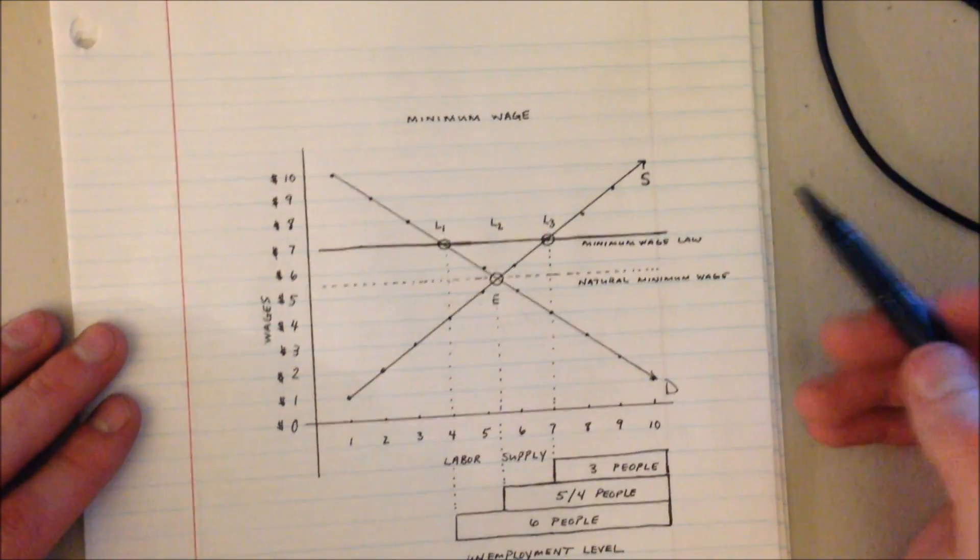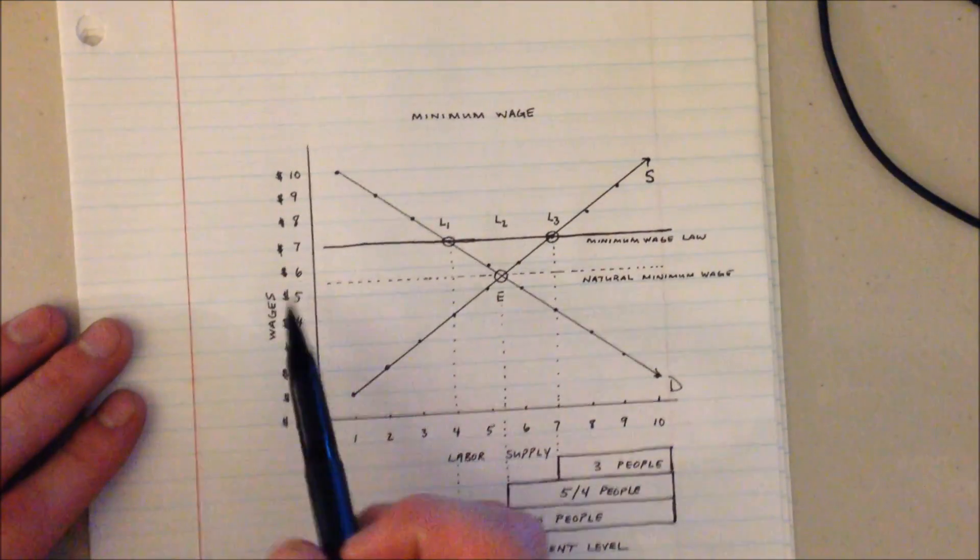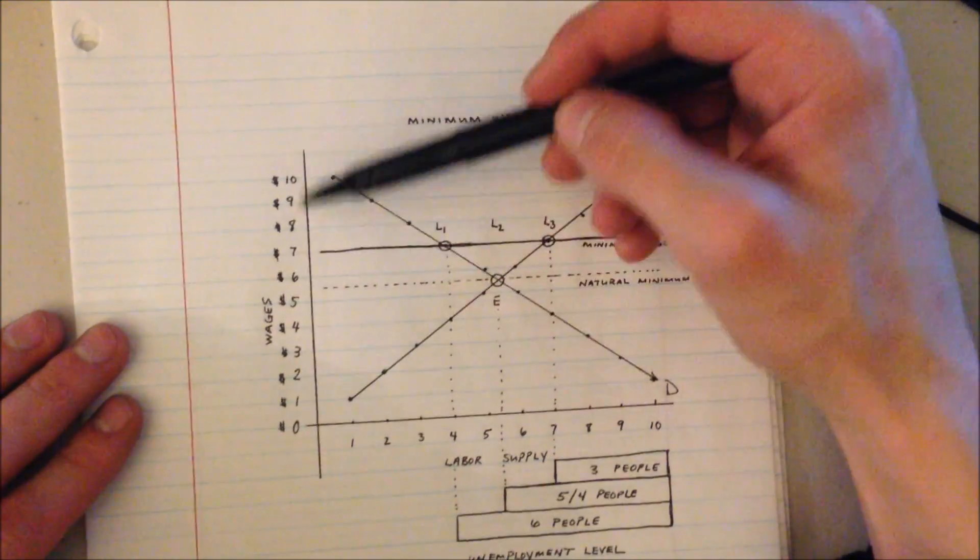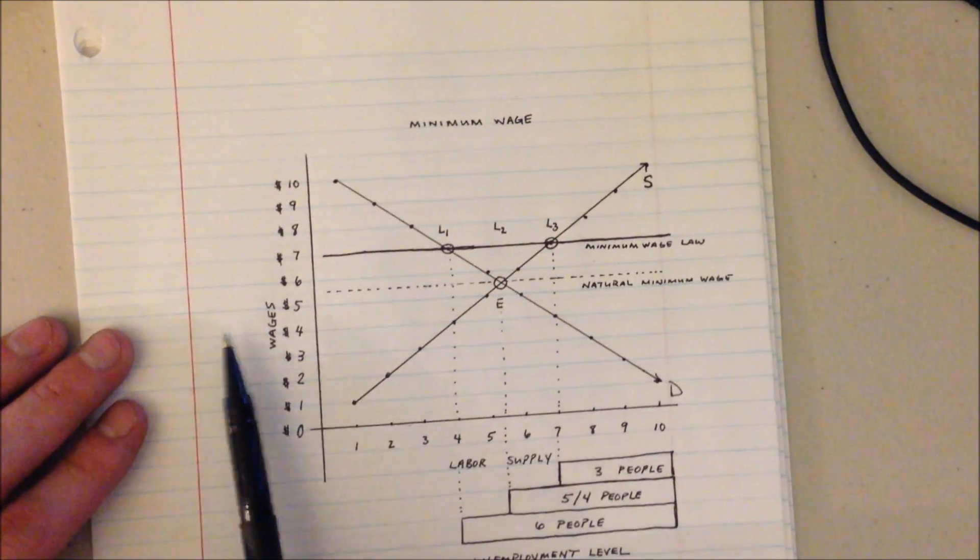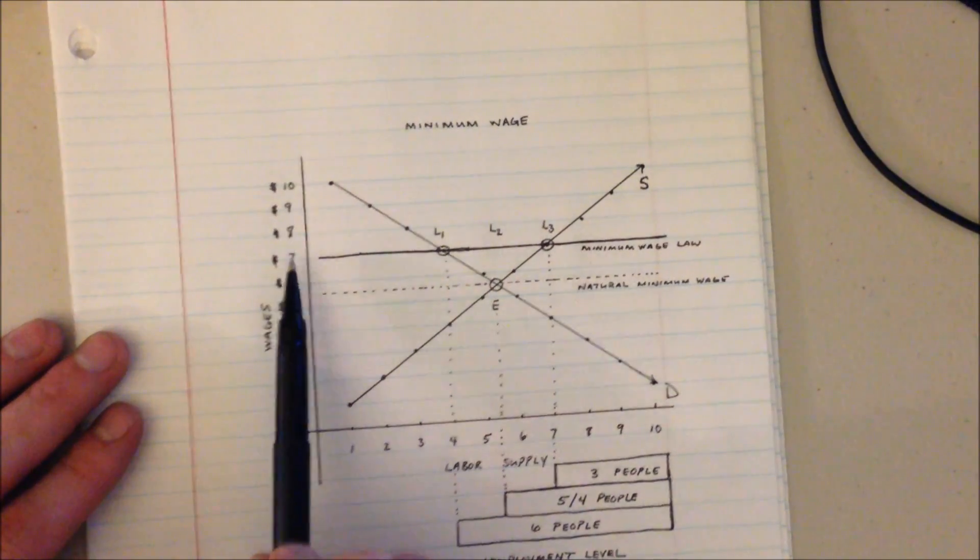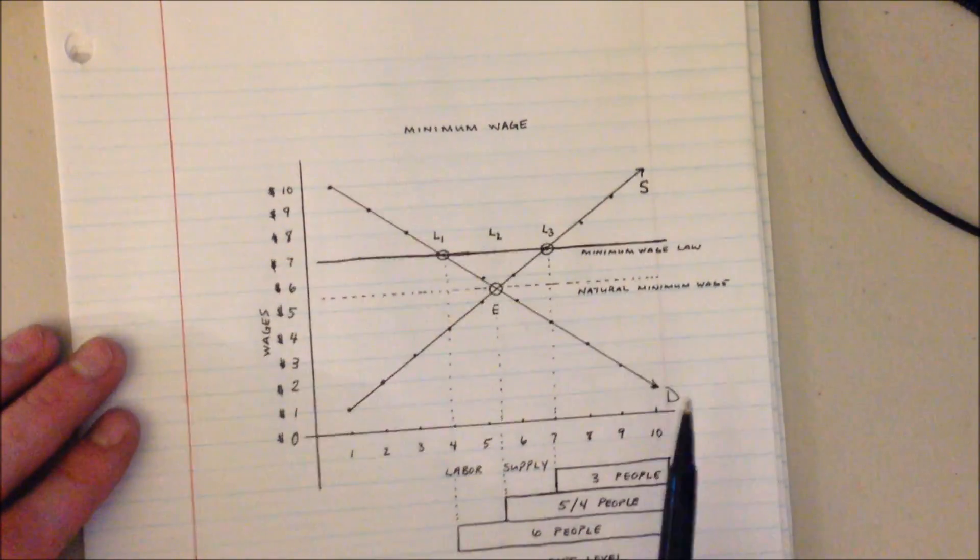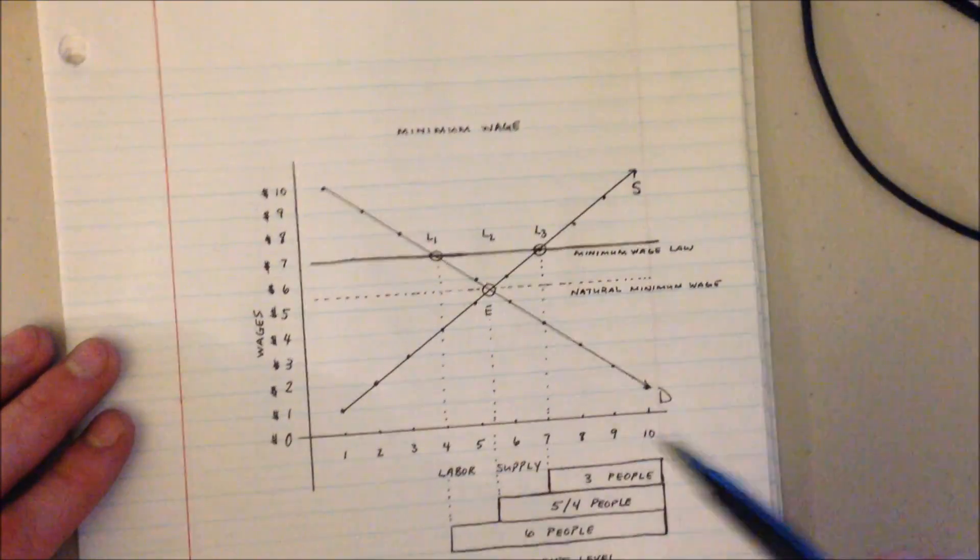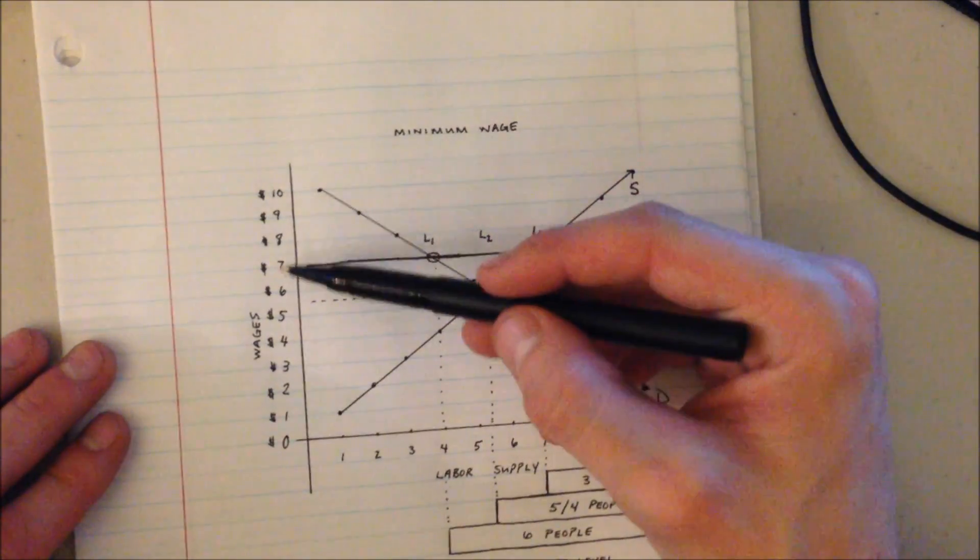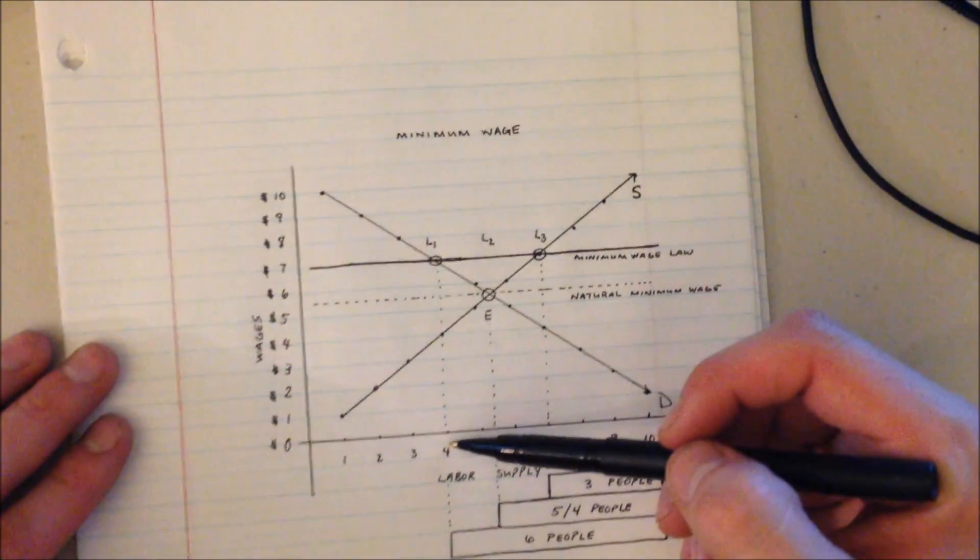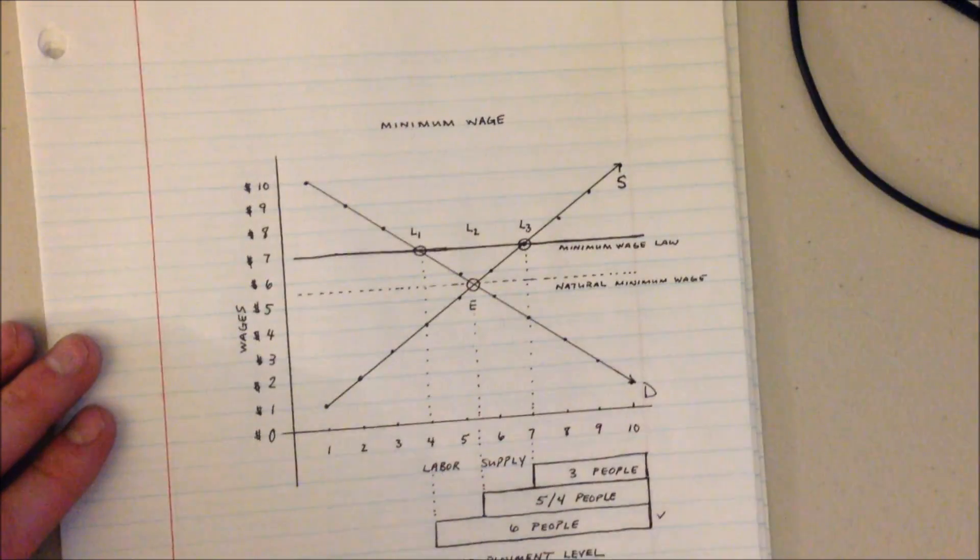Which one is the one that ends up happening? Well, because our y-axis with our wages is our input to determine our labor supply, and the demand line is paying $7 for their labor not vice versa, the demand line ends up getting to choose that. And so they say I'm only willing to give $7 for 4 employees. And so we end up having an unemployment of 6.